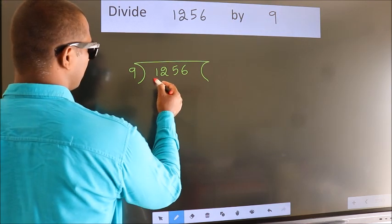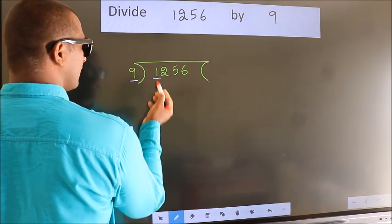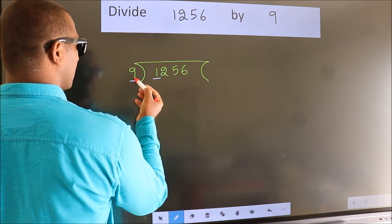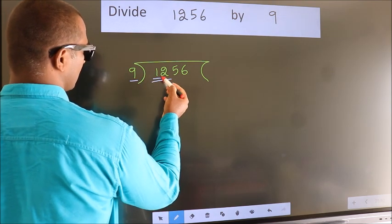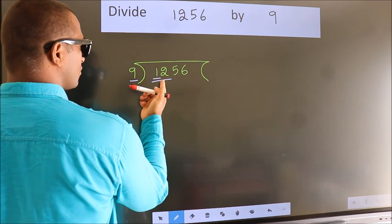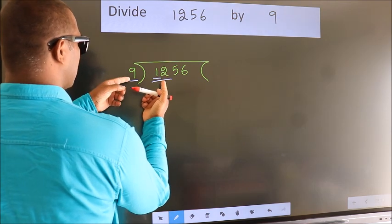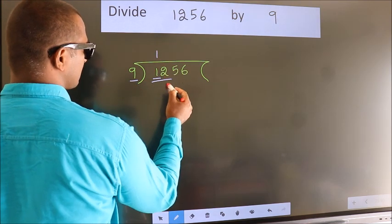Next, here we have 1, here 9. 1 is smaller than 9, so we should take 2 numbers, 12. A number close to 12 in the 9 table is 9 once 9.